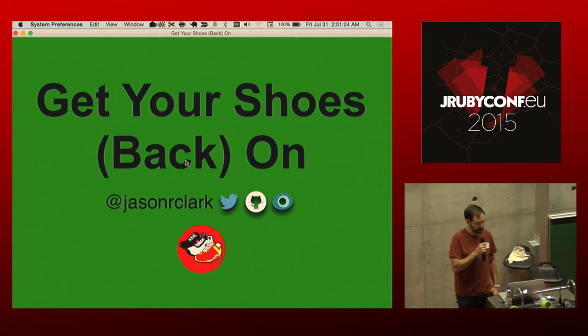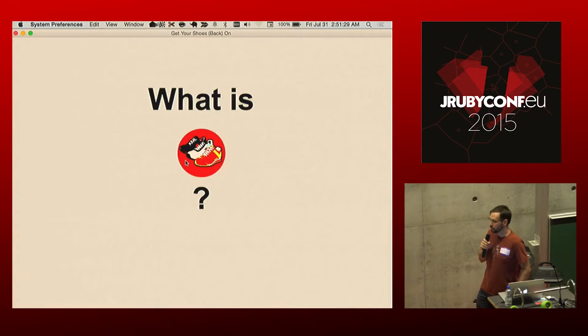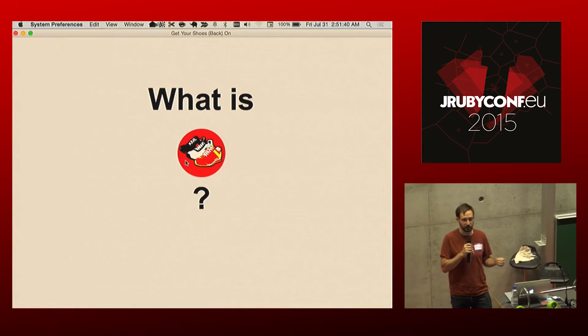But I'm here today mostly to talk to you about Shoes. So what is Shoes? Shoes is a GUI library built in Ruby so that you can write desktop applications, and it runs cross-platform. It runs on Linux, Mac, and Windows.